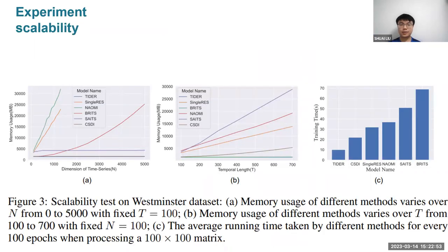Then we go to the scalability part. As we found in the previous tables, many deep learning models will go out of memory. Thus, here I carry on scalability tests on Westminster dataset. I compare the memory usage of different methods varying over N and also memory usage varying over T, and also average training time. As we can see in all three settings, TIDER has occupied the least memory and least training time, which shows its scalability compared to deep learning methods.